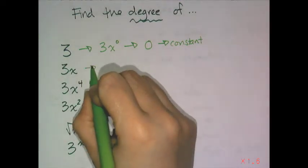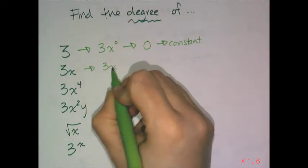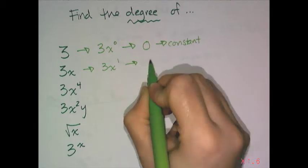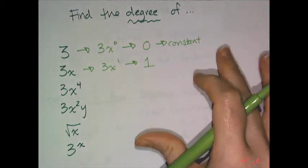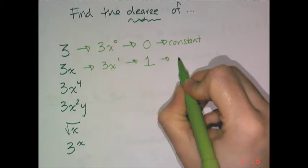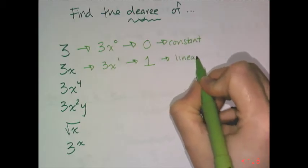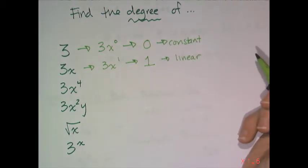Now if I look at 3x, this is really 3x to the first power, therefore it has a degree of 1. That's true for all things that are linear. 3x is linear and it has a degree of 1.